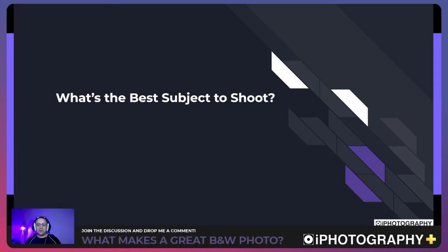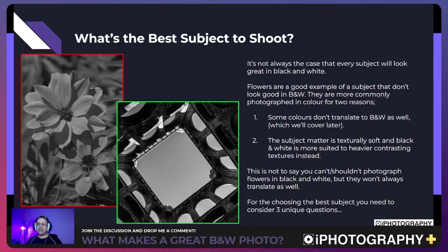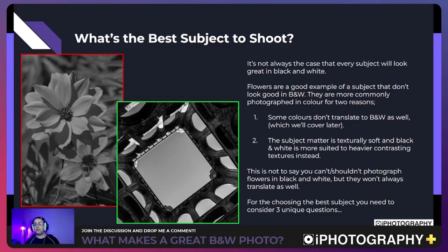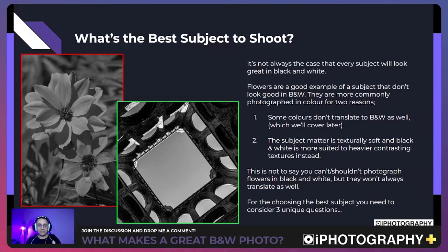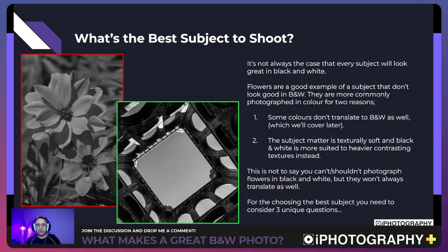So what's the best subject to shoot in black and white? Not every subject will look great — flowers are a good example that don't always work well. There are two reasons: some colors don't translate well into black and white, and flowers are texturally soft, whereas black and white suits heavier, contrasting objects. You can see this comparing a flower image to an architecture shot — the architecture gives us a dark inside against a lighter sky, creating strong contrast.